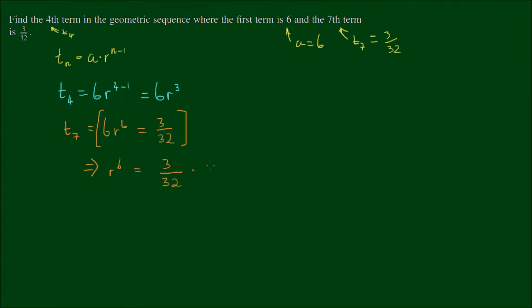So I'm going to rearrange and say that r to the power of 6 is equal to 3 on 32 times 1 sixth. So that's just dividing both sides of the equation by 6. The product of the left-hand side equals 3 on 192.